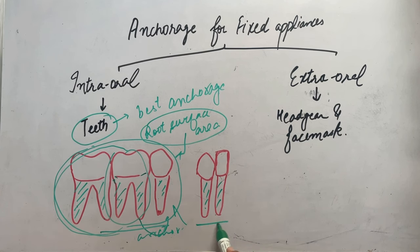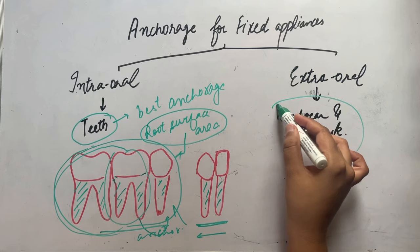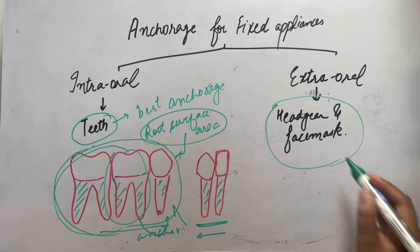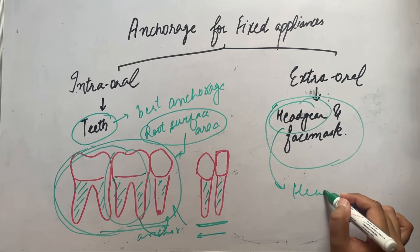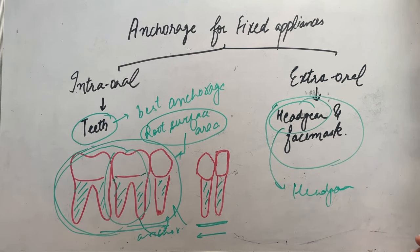And this is the segment that we want to move. Extraoral anchorage is provided by headgear and face mask. Headgear is the external anchorage source. It provides distal movement on the posterior segment.